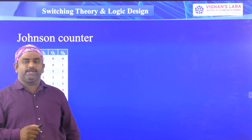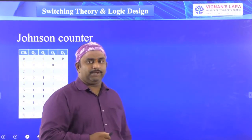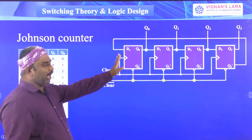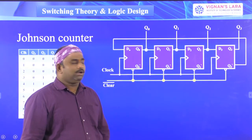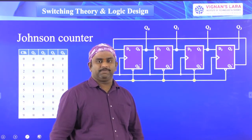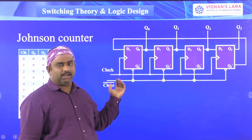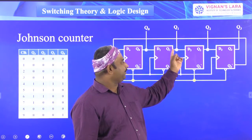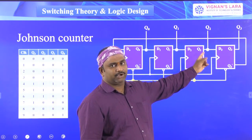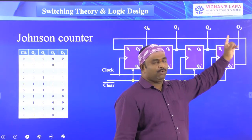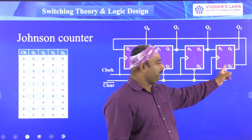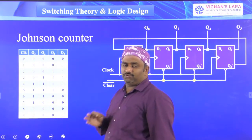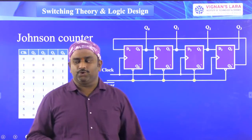This is also an application of a shift register. In the four-bit Johnson counter, we have four D flip-flops with the same clock signal. The first flip-flop output connects to the second flip-flop input, and so on. The fourth flip-flop output is Q3, but here Q3-bar is connected back to the first flip-flop input D0. This is the one key modification.